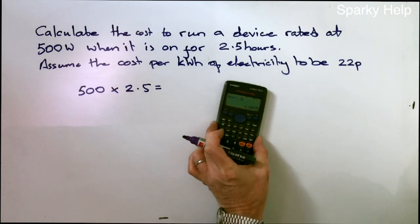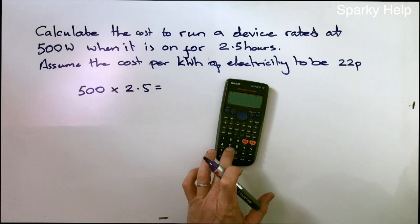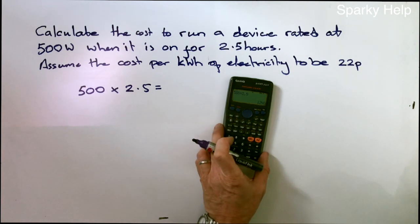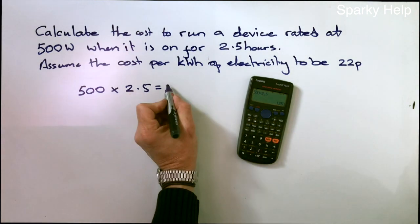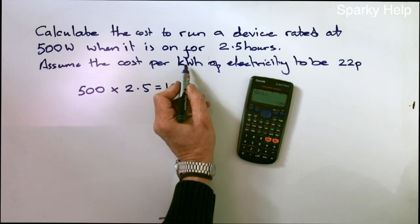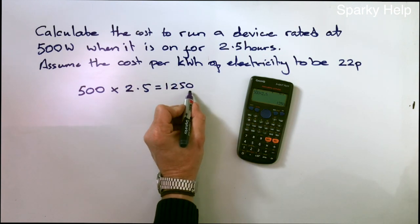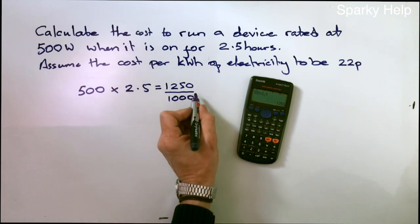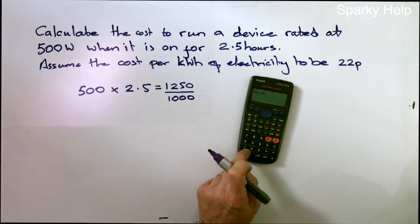So if we put that into our calculator, we get 1250. However, what that is, is watts. And we want it to be in kilowatt hours. So what we need to do is divide this answer by 1000. So divide by 1000.